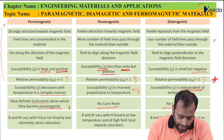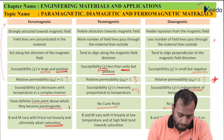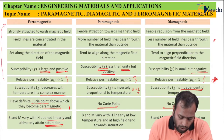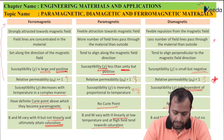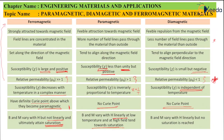Next point: in ferromagnetic, B and M vary with H but not linearly, and ultimately attain saturation. In paramagnetic, B and M vary with H linearly at low temperature, but at high temperature the field tends towards saturation. In diamagnetic, B and M vary with H linearly but no saturation is reached, even at high temperature.